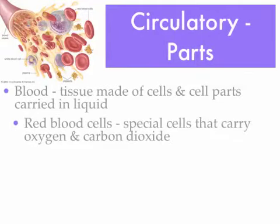The first type of cell you might see in blood is a red blood cell. They look like frisbees that are flattened in the middle. Red blood cells are very special — they have the job of carrying oxygen and carbon dioxide throughout the bloodstream. That's the primary role of red blood cells: carrying oxygen and carrying carbon dioxide.